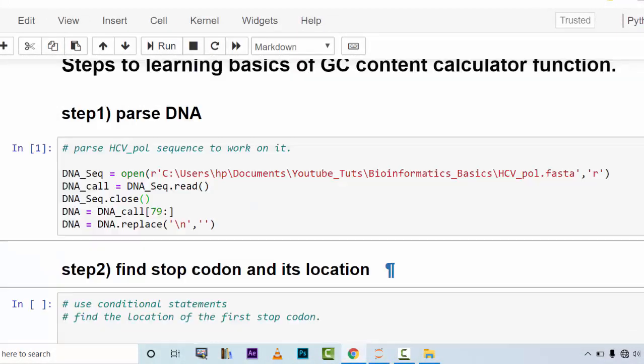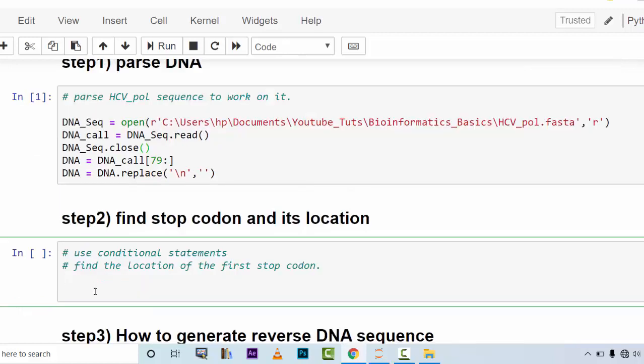The second step is to try to find stop codons, start codons, or certain locations within your DNA. This is an important practice for you to start using conditional statements in your functions. Let's try to find a stop codon in DNA sequence. The DNA sequence has been put into a variable called DNA, which is here. This is the name of the variable that I'm going to use.